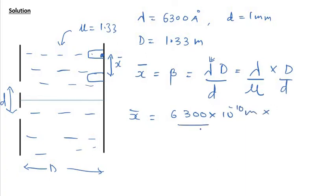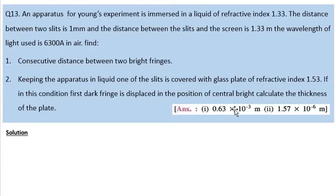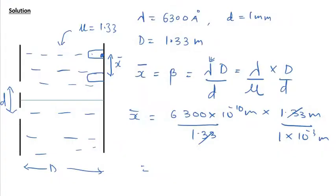This is in air, but we have to divide this by 1.33 because that would be the decreased wavelength in water. This is 1.33 meters upon small d is 1 into 10 raise to minus 3 meters. If you calculate this you will get your required answer which is 0.63 into 10 raise to minus 3 meters. So if you solve this you will get your answer as 0.63 into 10 raise to minus 3 meter. This is the first part of the problem.